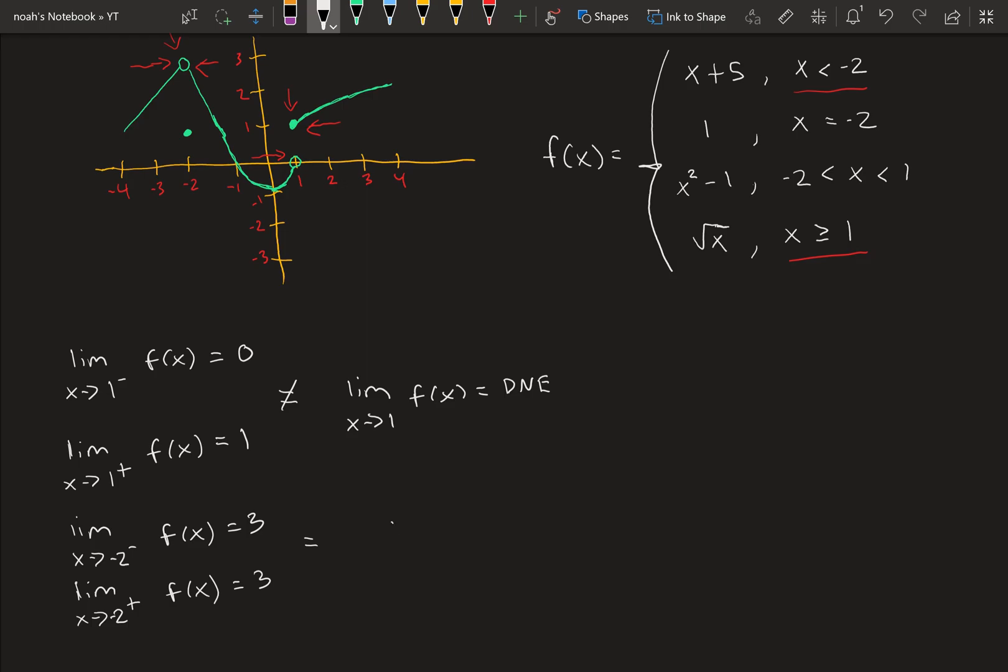And so, these are equal. So the limit as x approaches minus 2 of f of x would be 3. However, notice that there's this dot right here. There's this point right there, represented by this point right here. So at x equals minus 2, we have f of x equal to 1.